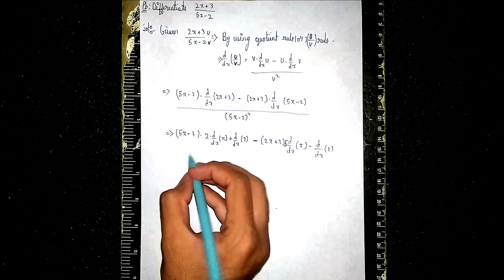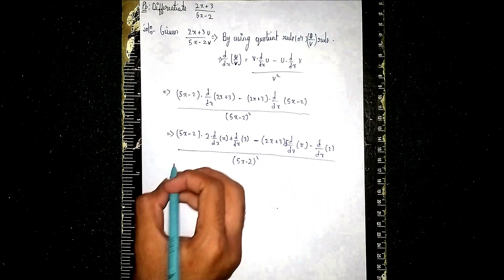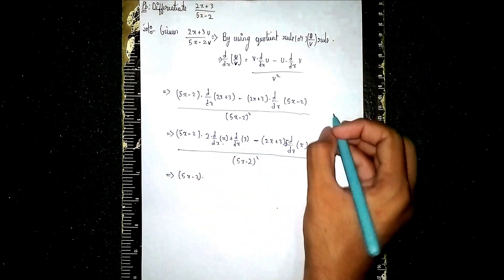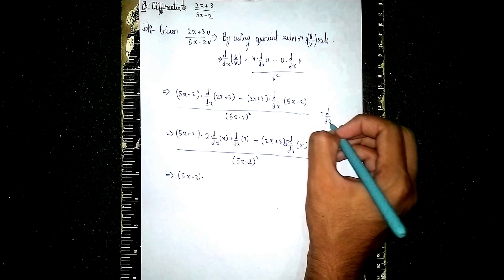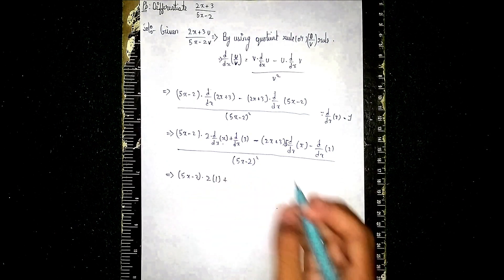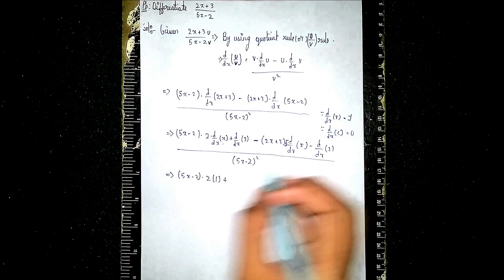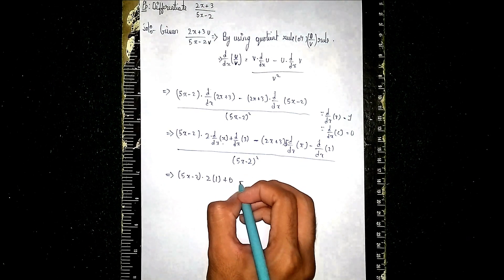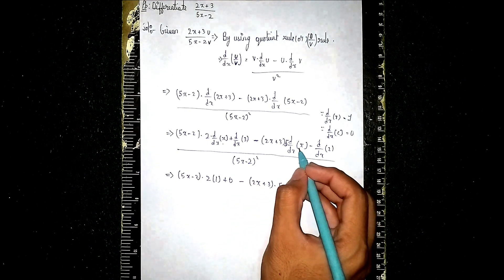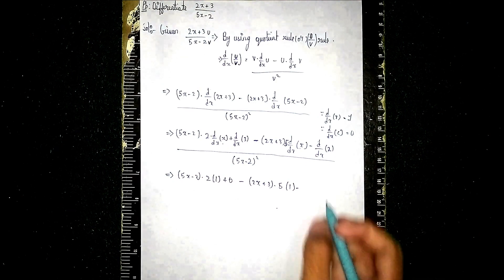All of this divided by (5x - 2) whole squared. Now applying the basic formulas: d/dx of x is always 1, and d/dx of any constant is always 0. So 2 into 1 plus 0 gives 2, and 5 into 1 minus 0 gives 5.